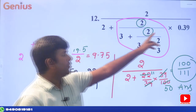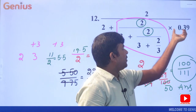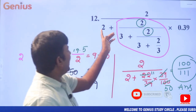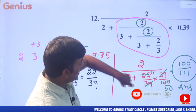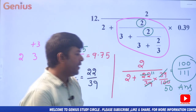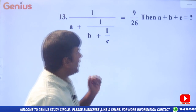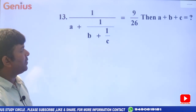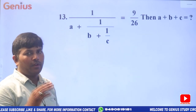When solving this kind of problem, first do the multiplication then add. Be careful: 2 is there, so handle it carefully. The overall answer is 100 by 111. Now see the next problem — this is a different kind.